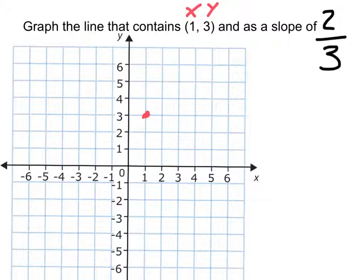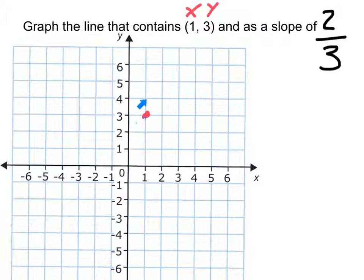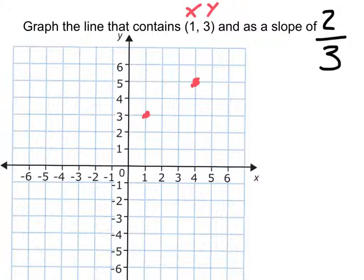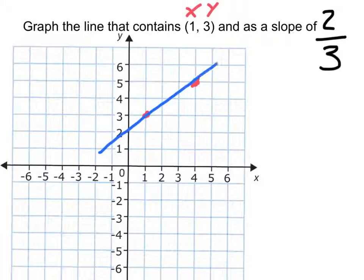Next we need to figure out what the slope is. The rise is 2 — we're going to go up 2 — and then we're going to go to the right 3 because this is a positive. So let's count up 2, and then over 3. When we get there, we're going to draw a nice little dot. These are our two points; we now need to graph this line, and when we do, it's going to look a little something like that.